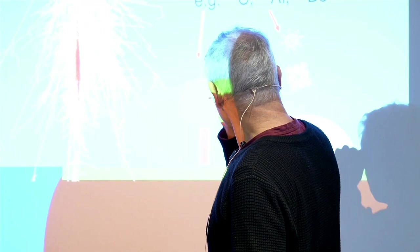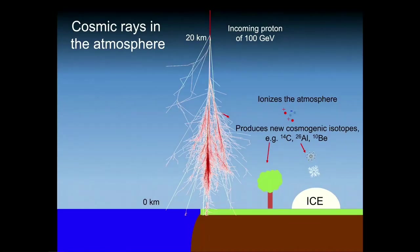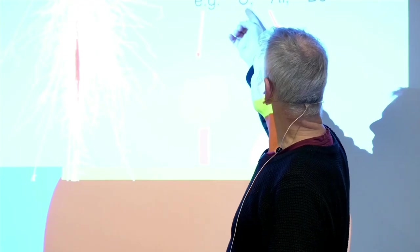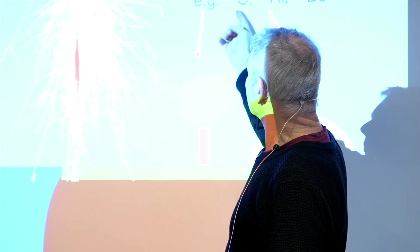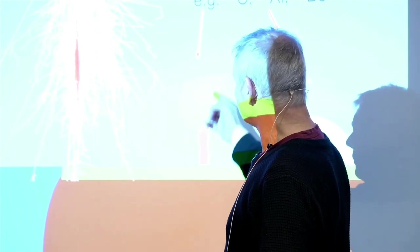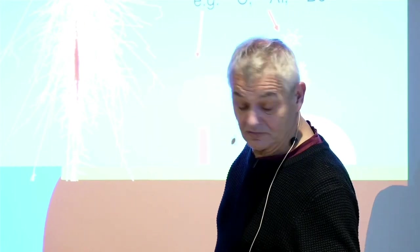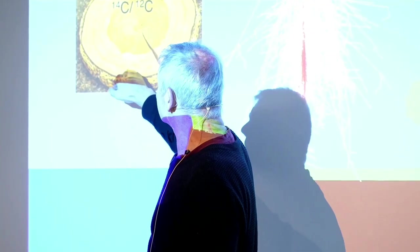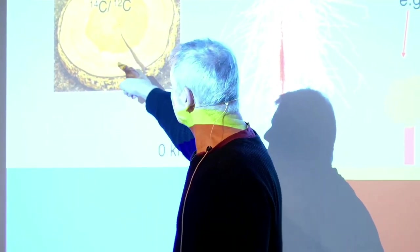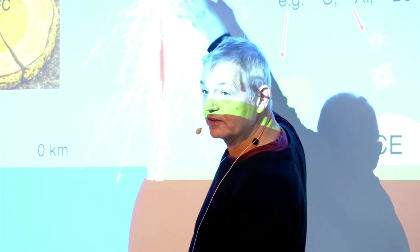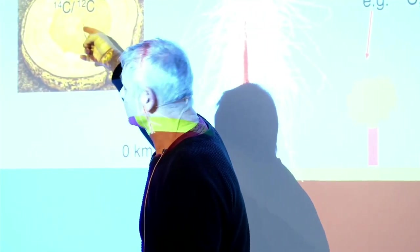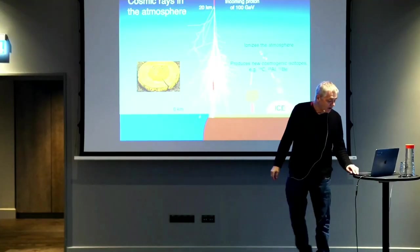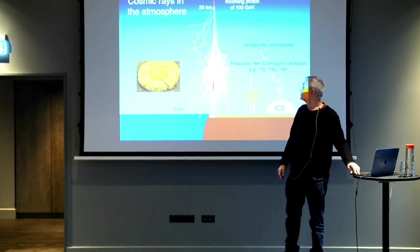Carbon-14 is produced by cosmic rays. What might happen is that the carbon-14 goes together with oxygen, becomes CO₂, and plants then uptake that CO₂. Then you can measure the ratio of carbon-14 to carbon-12 at different tree rings, and from that you can actually say something about how many cosmic rays entered the atmosphere. By measuring this, we can say something about how solar activity has been changing back in time.